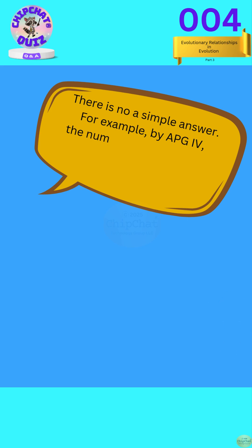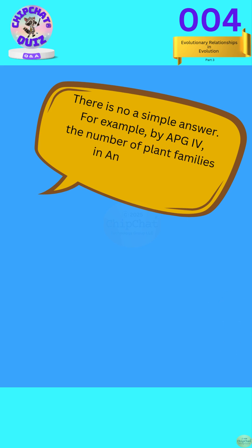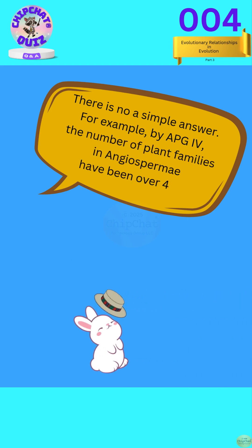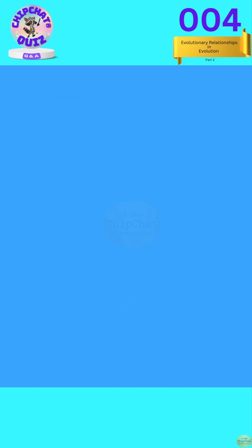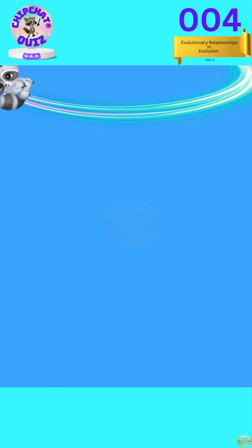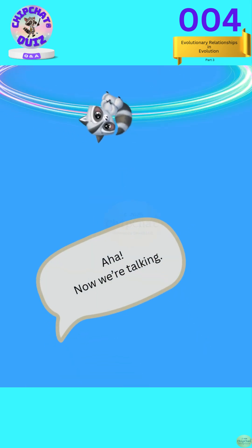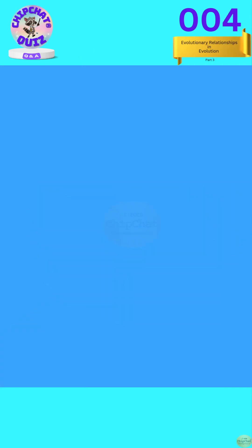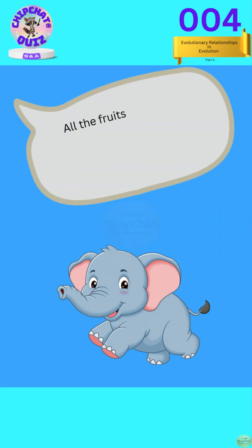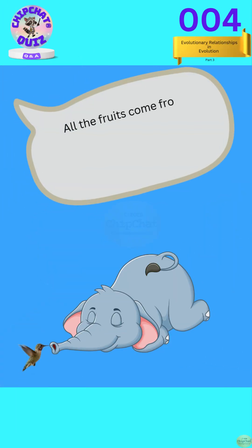For example, by APG4, the number of plant families in angiosperms has been over 400. Now we are talking. All the fruits come from angiosperms, the flowering plants.